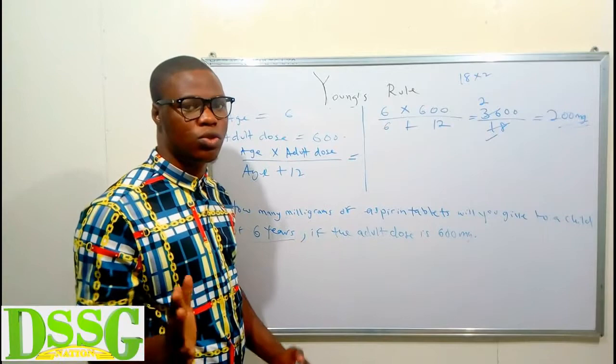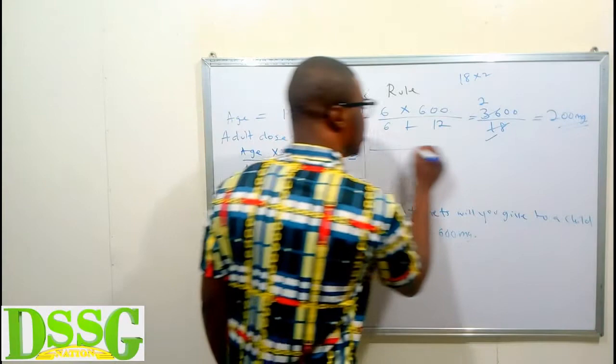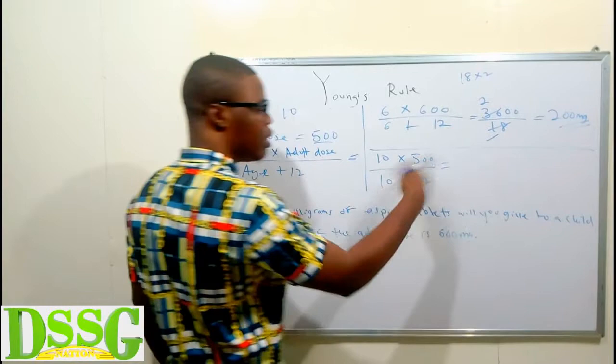For example, if the age is 10 and the adult dose is 500, the formula becomes: 10 multiplied by 500, all over 10 plus 12. Do the math and that is your final answer. I want you to know how to apply this formula to solving your parameters. Now let's move to Fried's Rule.